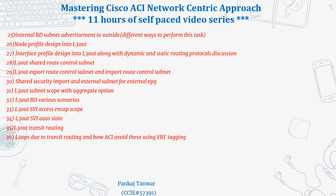And then topic 35, we'll discuss Layer 3 out transit routing, and then we'll discuss if you are using transit routing, how it can cause loops in the network. But because ACI already has some kind of mechanism, which is VRF tagging, because of that there won't be any loop in the ACI fabric.